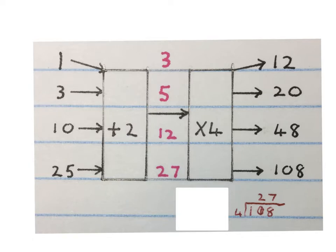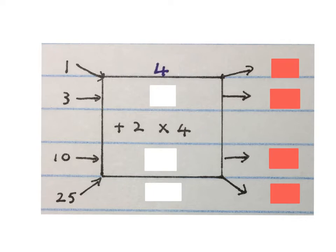Please stop the video and make sure that you understand how to work forward and backwards on this flow diagram. In this flow diagram they told us what to do but didn't tell us what to do first, so BODMAS will kick in. They told us to take this number, plus 2 to it and times it by 4, but BODMAS says we must do the times first and then plus the 2. So 1 times 4 gives us 4, and then 4 plus 2 will give us 6.